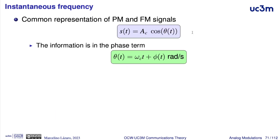In this common representation, the angle of the carrier, in general, will be written as the term associated to the frequency, omega_c times t, plus a term phi of t. And the information will be in this term phi of t.